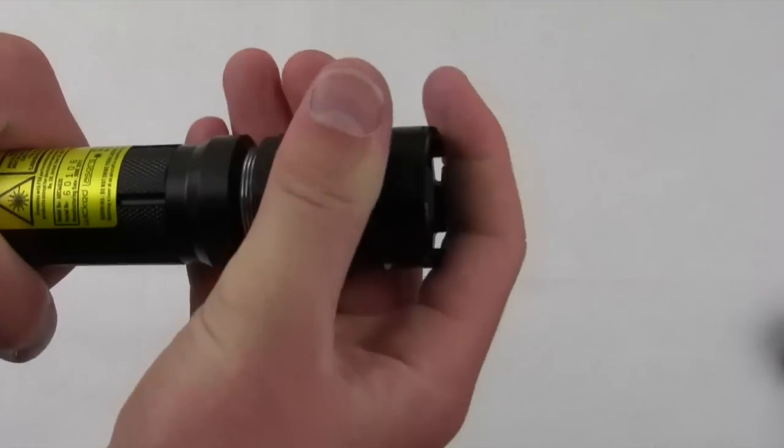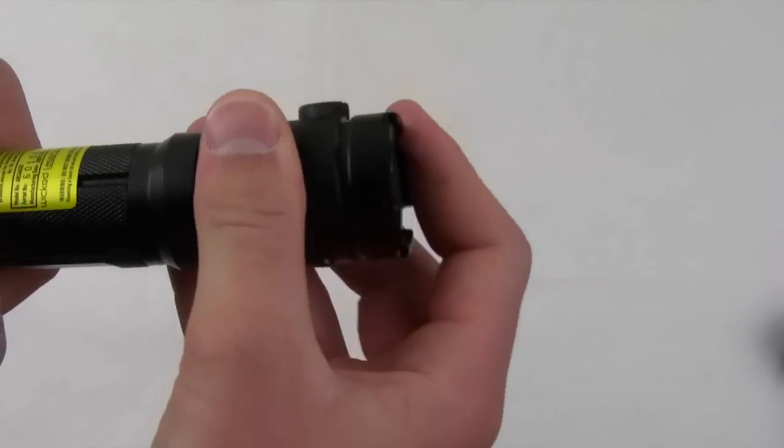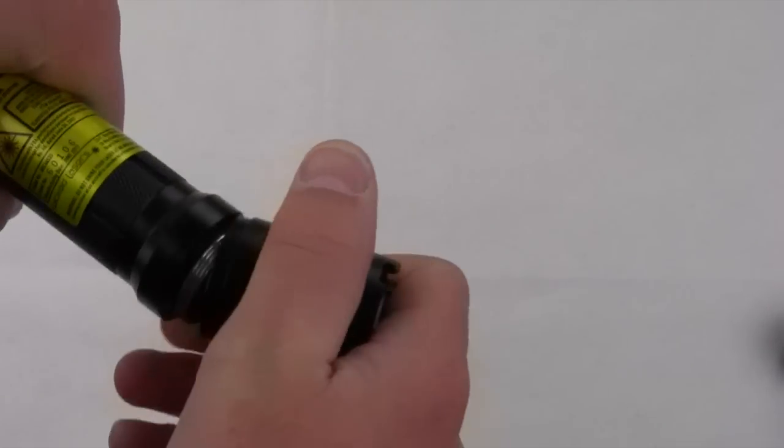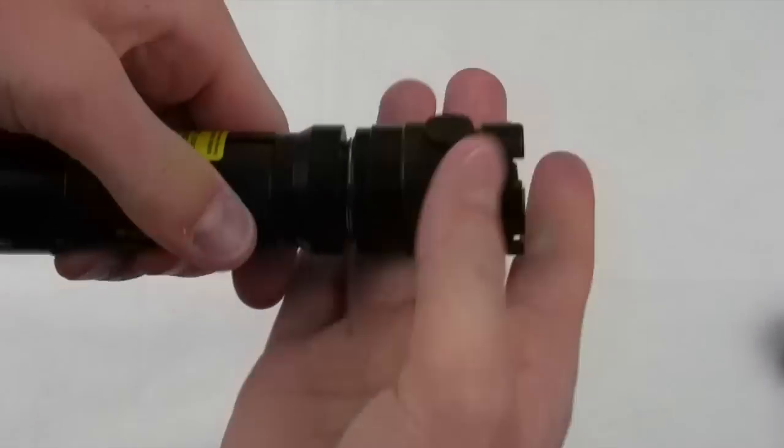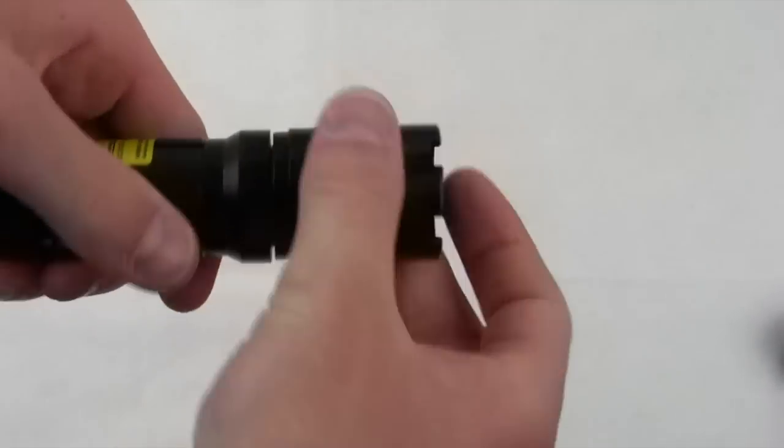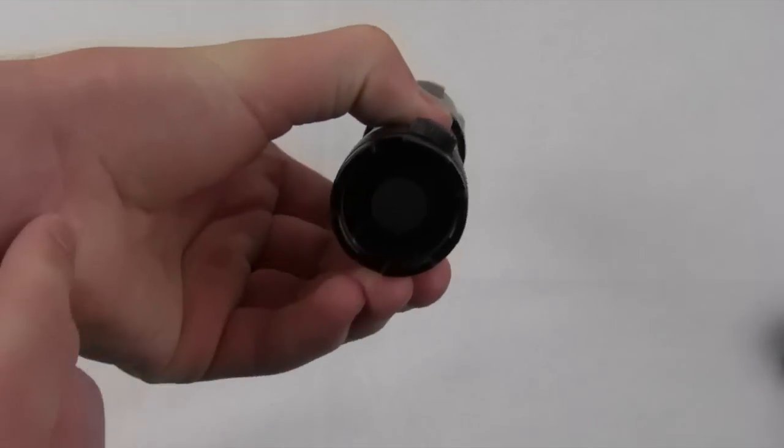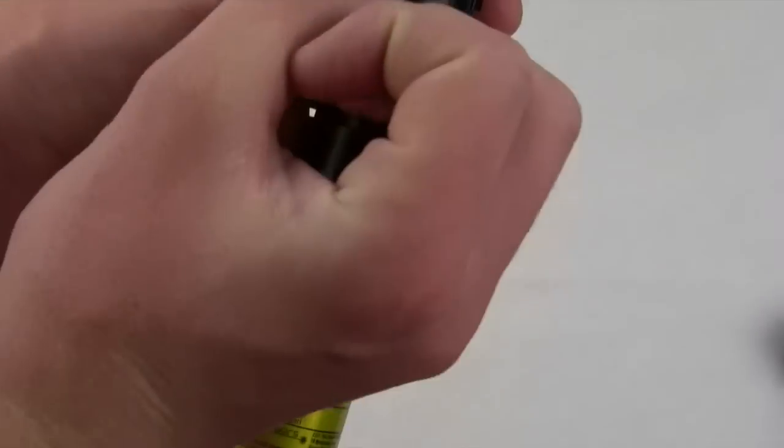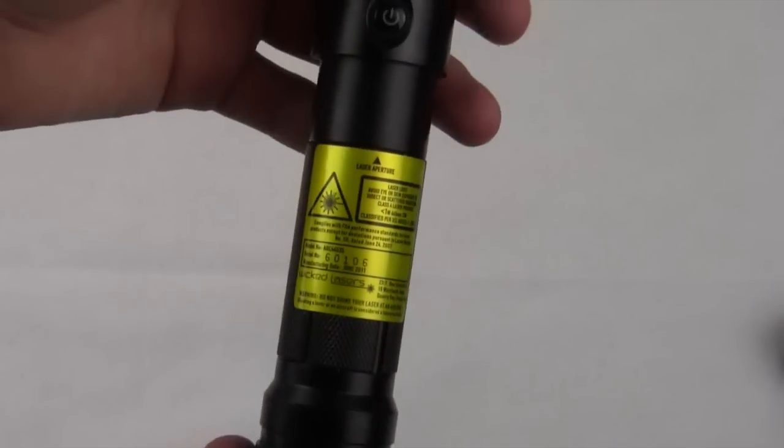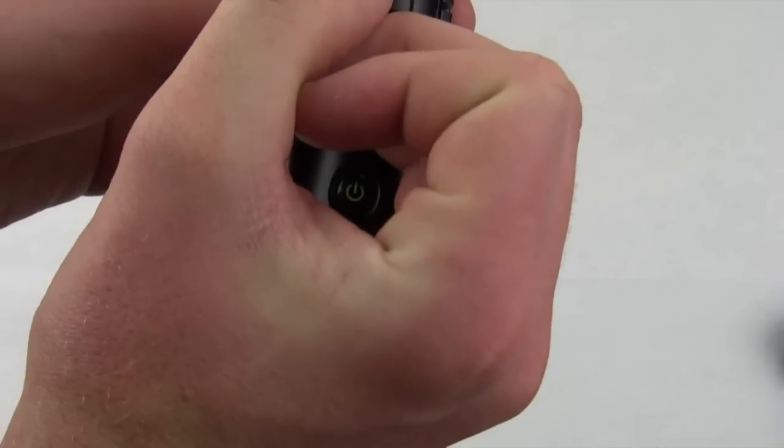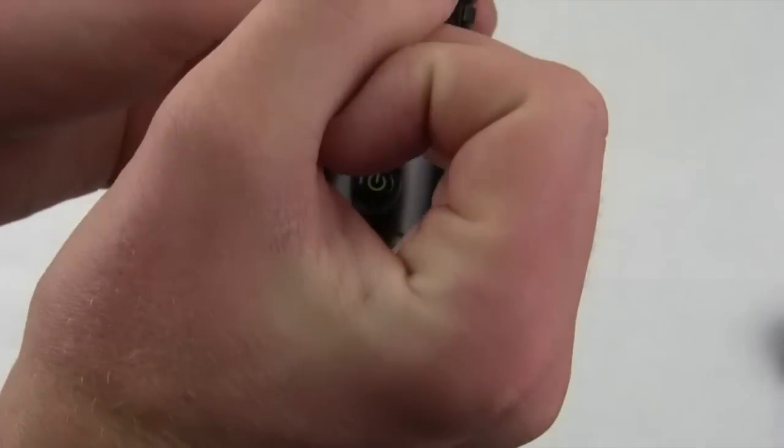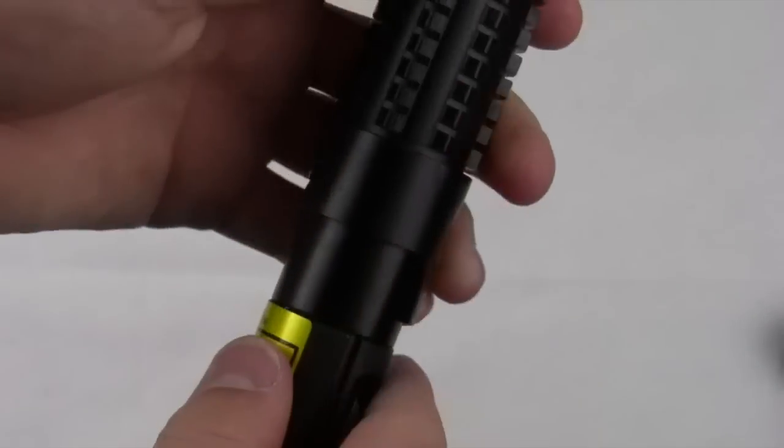Screw it back on once you can get the threading on. Struggling a little bit around the camera there. There we go. Okay, so let's power the laser on. There's the first power button and you'll notice that you can't see it come on right here. The lasers are too bright. All right, there we go. It's hard to get these things to turn on.